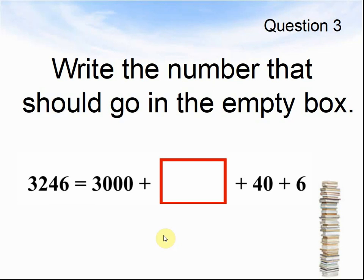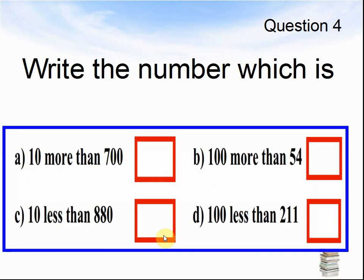Pause the video until you are ready for question 4. Here comes question 4. Write the number which is 10 more than 700. B, what number is 100 more than 54? What number is 10 less than 880? And finally, D, one hundred less than 211. Pause the video until you are ready for the next question.